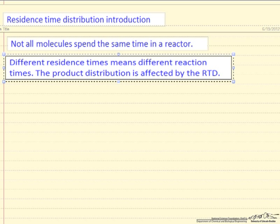So product selectivity, for example in polymerization reactors, polymer molecular weight distribution can be significantly affected by the residence time distribution. So we'd like to be able to determine the residence time distribution for a real reactor, and we can do this experimentally using a tracer technique.